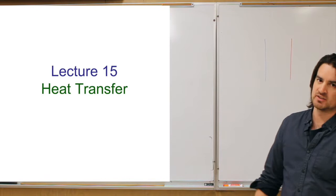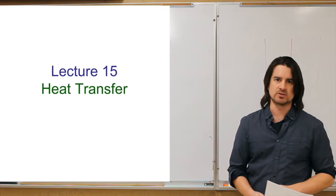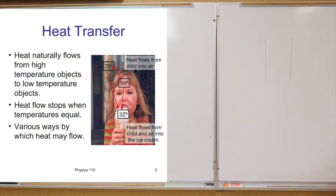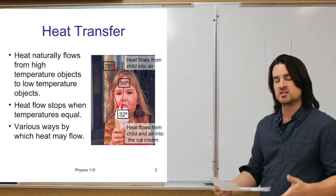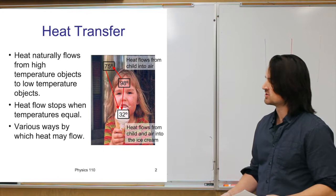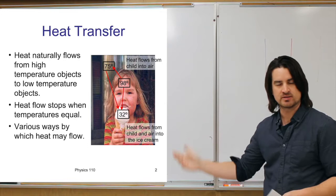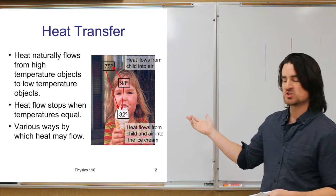This week's lecture is specifically on heat transfer, because we didn't really talk about how you heat objects up or how that heat gets transferred. Heat is just a name for a flow of energy, and as I mentioned last time, heat naturally flows from higher temperature objects to lower temperature objects. Heat flow will stop when thermal equilibrium is reached — when both objects or materials are at the same temperature.